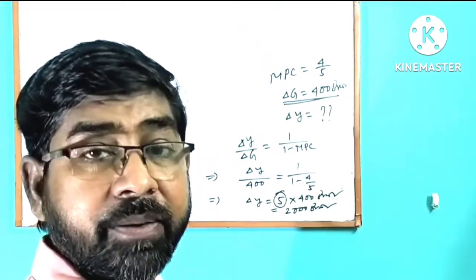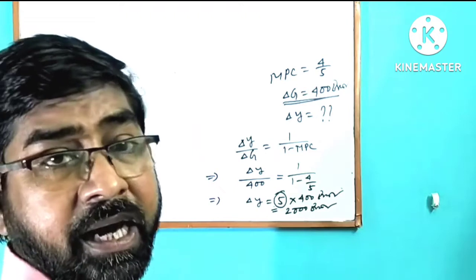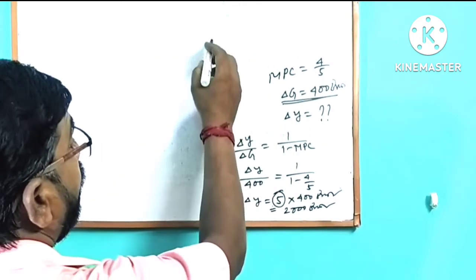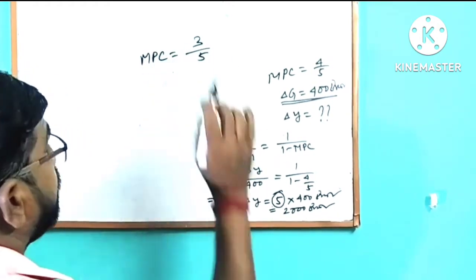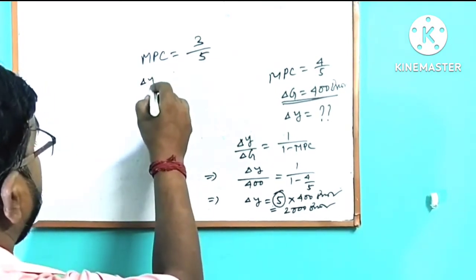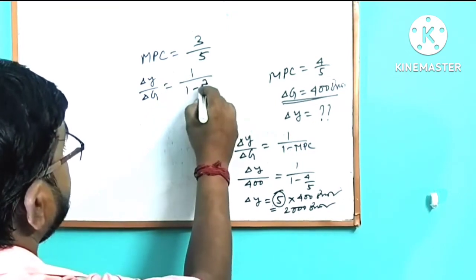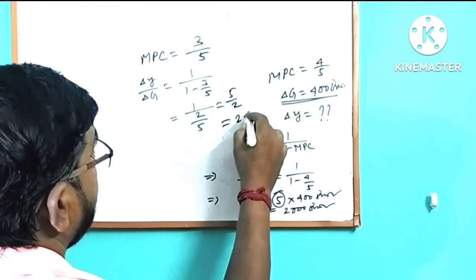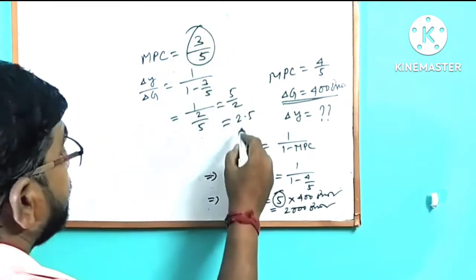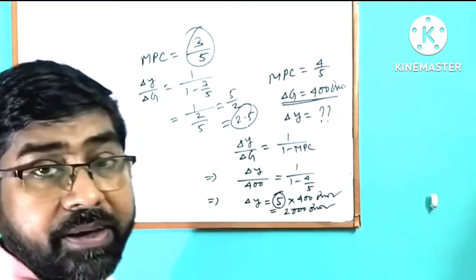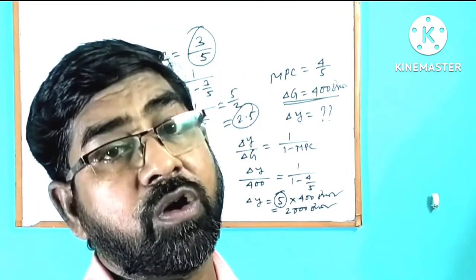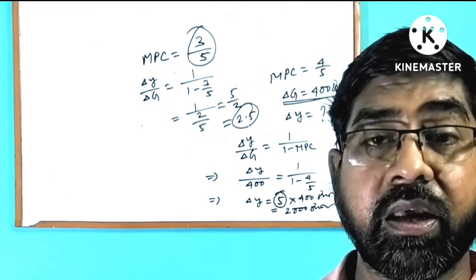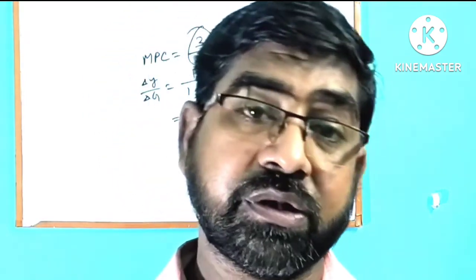The national average population has 5 schools. As you can see, the average population is 5 schools where the population is 3 schools, or MPC man, which is 1 by 1 minus MPC. That means 1 by 5 minus 3, that means 1 by 2 by 5, that means 2.5. So MPC man, which is 2 by 5, that means the multiplier value is 2.5.